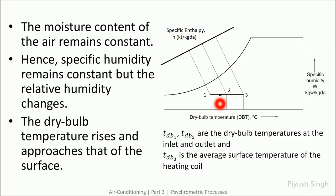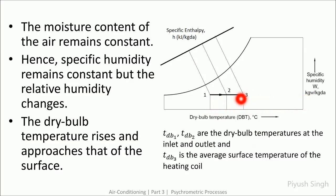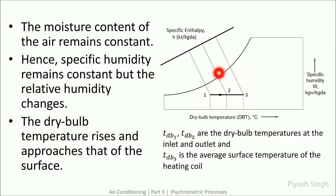This process is represented by a horizontal line on the psychrometric chart since there is no change in moisture content and hence the specific humidity remains constant. If we talk about relative humidity, it decreases with increase in dry bulb temperature. Also, there is a net increase in the specific enthalpy of the air.